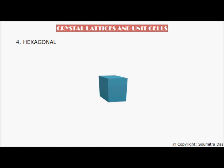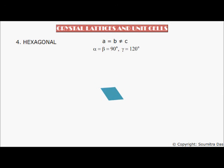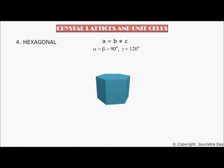Number four: Hexagonal. Here, a = b ≠ c and alpha = beta = 90 degrees but gamma = 120 degrees. Why is it called hexagonal? Looking at the top view, we see a rhombus. Taking two more rhombuses like this, we get a hexagon. The hexagonal system is only available in the primitive form.